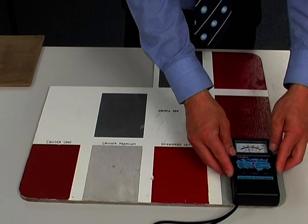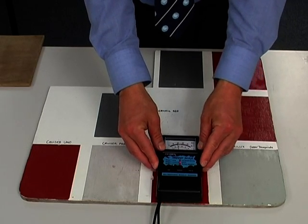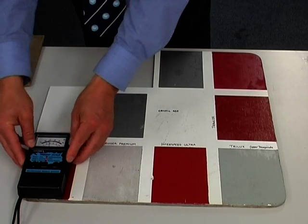Here we have Trilux, which is common on stern drive units, again giving us a reading just under 40. The same on the Interspeed Ultra, Cruiser Premium, Cruiser Uno.